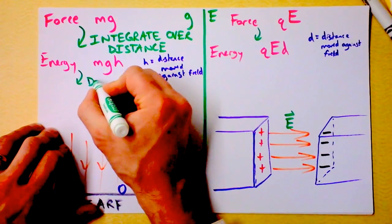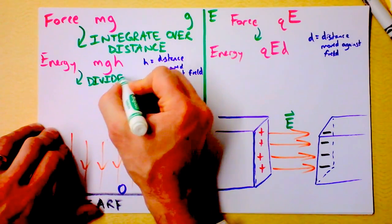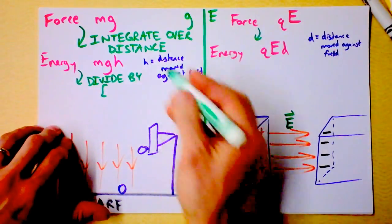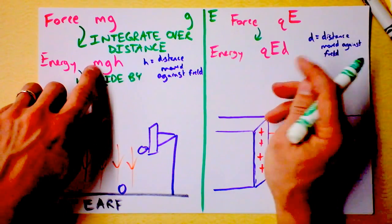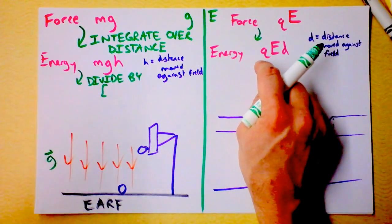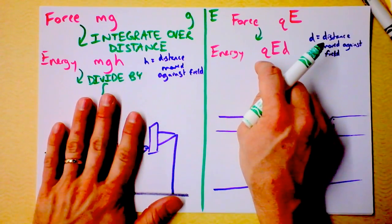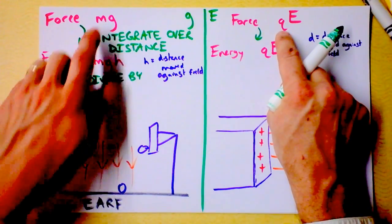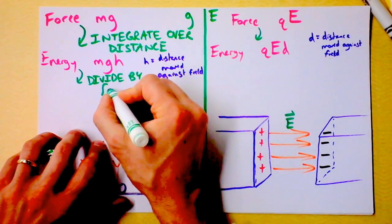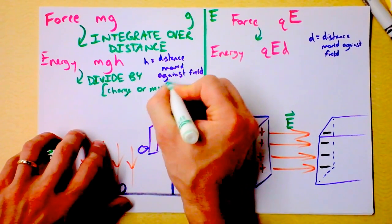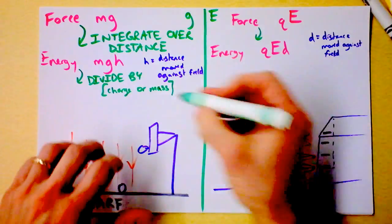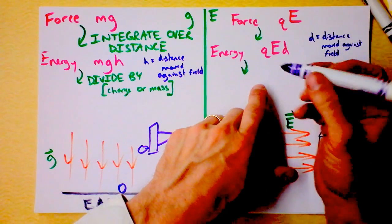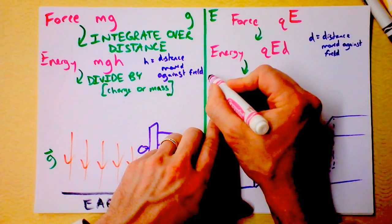We need to know how to get from energy to this idea of potential. I want to divide by, and here it depends whether we're talking about gravitational or electric. Notice that in this one we've got a mass, and in this one we've got a charge. These mass and charge quantities are what governs how a particle feels the force. Something with more mass feels more gravitational force, something with more charge feels more electric force. And you see that right here. That's what governs how much force is being felt. So we're going to divide by charge or mass, depending on the circumstance of the problem.